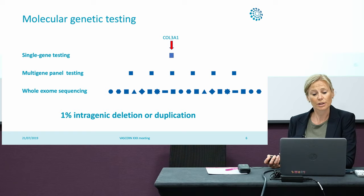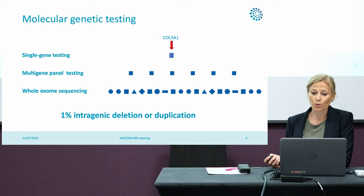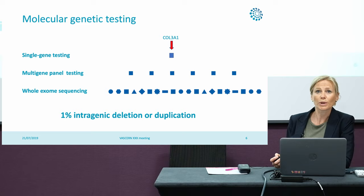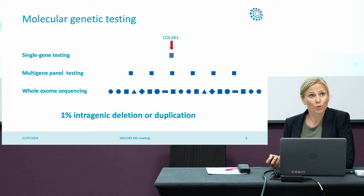Some patients have a broader phenotype that looks like other connective tissue disorders, and then often whole exome sequencing is performed. We can detect variants in the COL3A1 gene using this technique, and it's used more often these days. We have to be aware that in about one percent of cases we find intragenic deletions or duplications, and if you don't find a variant in the COL3A1 gene you have to perform a technique to look for these deletions and duplications, for example MLPA.